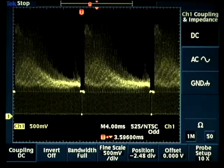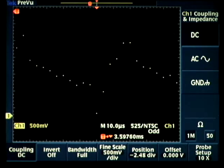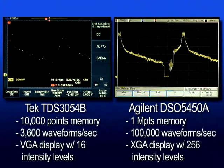Stopping the TEC scope and zooming in highlights the disadvantage of only 10,000 points of memory as the waveform detail is lost, again giving you less ability to isolate events of interest.